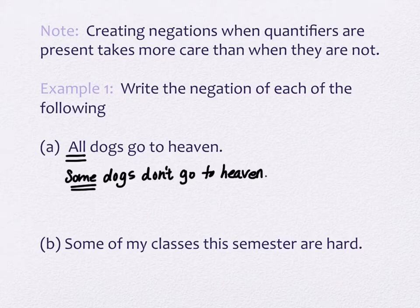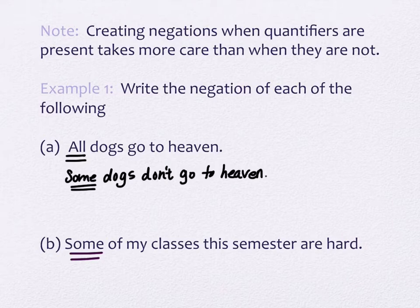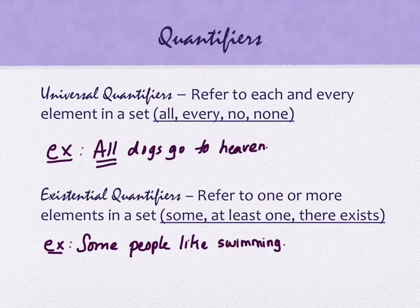Here is a statement some of you might relate to: 'Some of my classes this semester are hard.' It could be when you say that, you actually mean they all are — and that'd be okay; it wouldn't be a false statement. But the quantifier here is 'some,' which is existential. As soon as you see existential, you should automatically know you have to change it into a universal quantifier. There are universal quantifiers that are positive — all and every — and some that are negative — no and none.